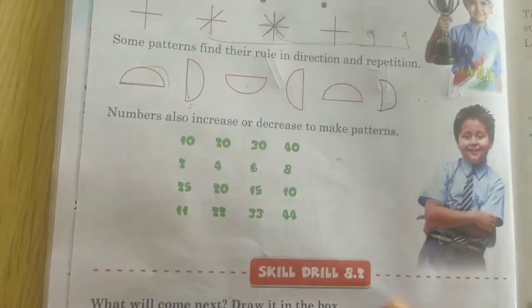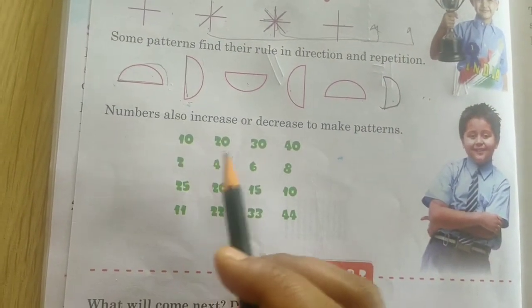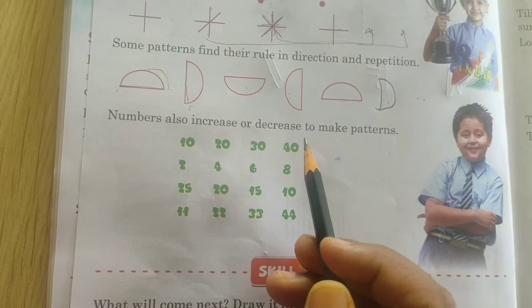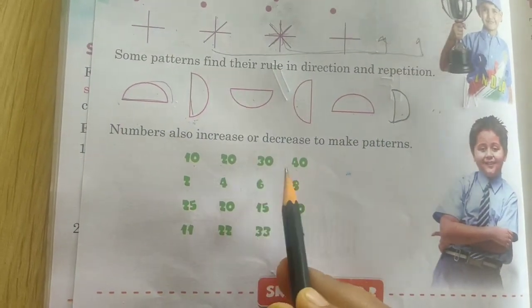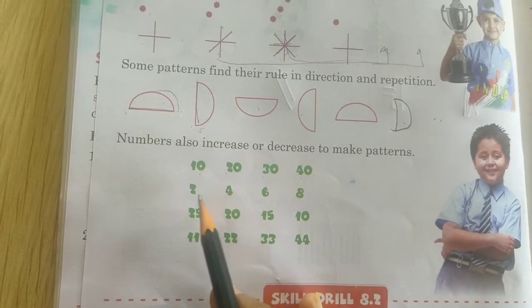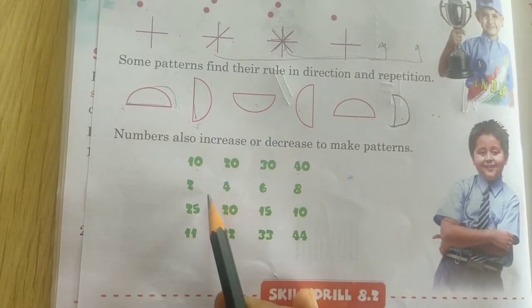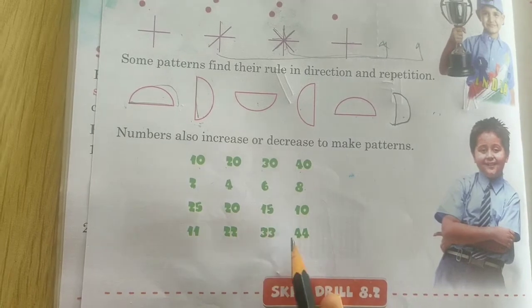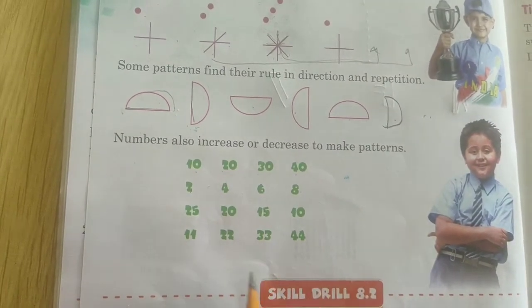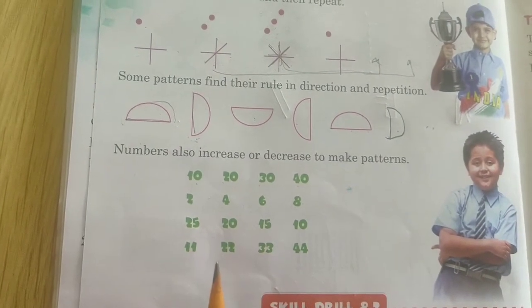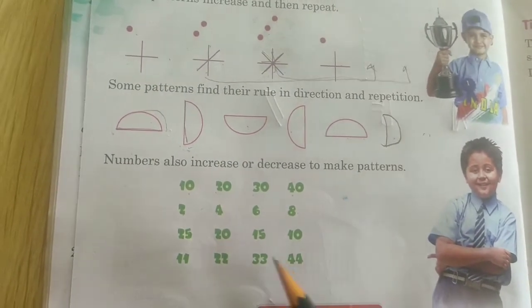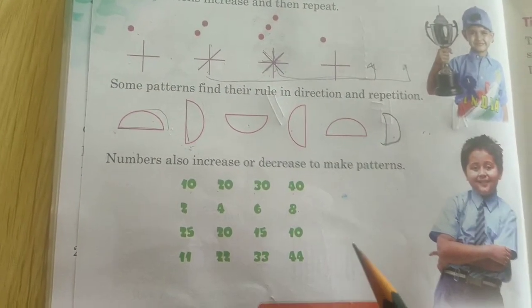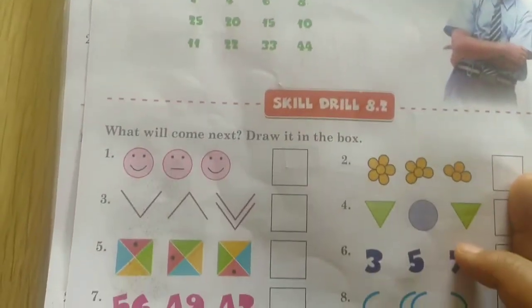So also we can use in the number also. Number increasing or also decreasing to make the pattern. See now 10, 20, 30, 40. All the difference is 10. Now 2, 4, 6, 8. In between the difference is same. So what we call it as? These are the patterns. Are you getting? Pattern means the same thing is repeating is called as pattern.